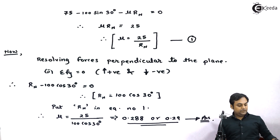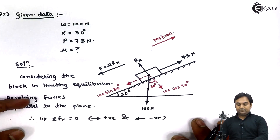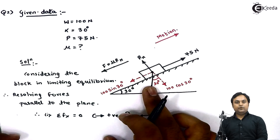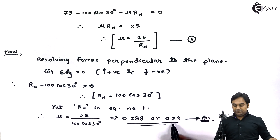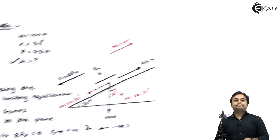Looking back at this problem, they asked us to find the coefficient of friction between the block and the plane. The answer is 0.29, and with this we complete the question.